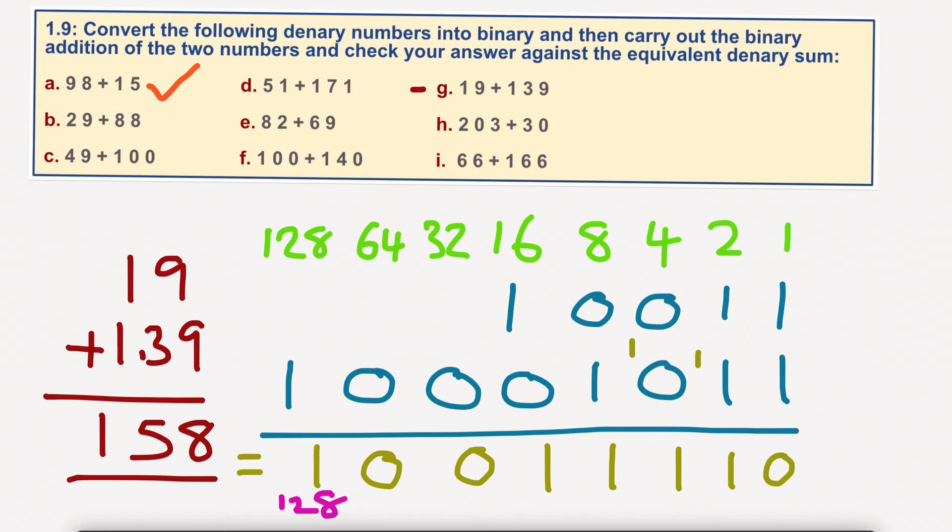So, we have 128 plus 16 plus 8 plus 4 plus 2 equals, well, let's go this way, 16 plus 4 is 20, 8 plus 2 is 10, 30 plus 128 equals 158. We are correct. Okay. Give that one a tick.